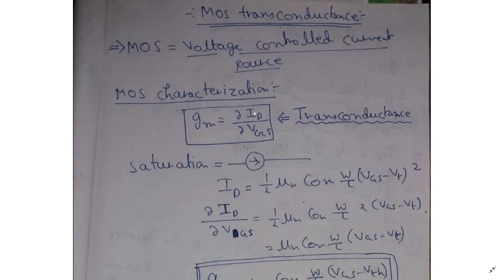Basically, as saturation region is our main interest — since the amplifier works in saturation region (point one), and in saturation region MOSFET acts like a proper current source (point two) — for these two reasons we will define the MOSFET transconductance parameter as ΔI/ΔV with respect to VGS. So for MOSFET characterization, this parameter called GM is denoted as GM = ΔId/ΔVGS — that is, change in drain current with respect to change in VGS.